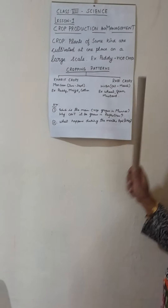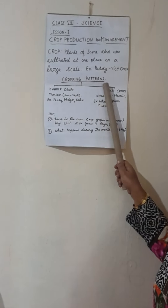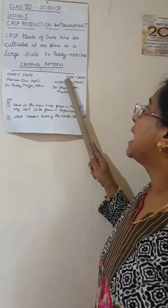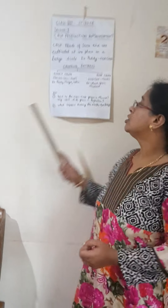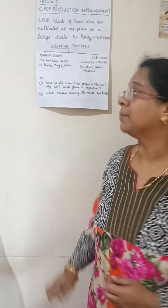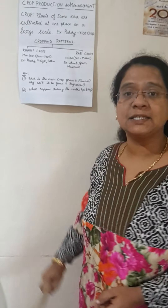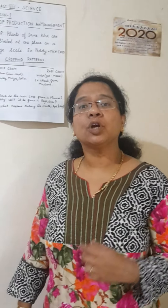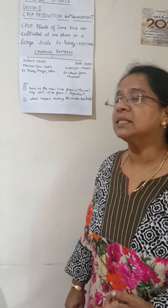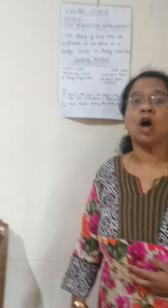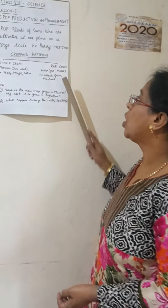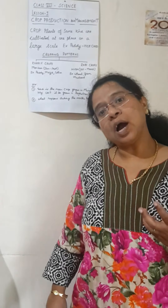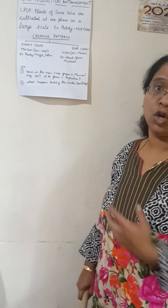These two cropping patterns are called kharif crops and rabi crops. They are based on the seasons in India. Monsoon is a very important season in India, occurring between June and September. The crops grown between June and September are called kharif crops, while crops grown between October and March — the winter months — are called rabi crops.